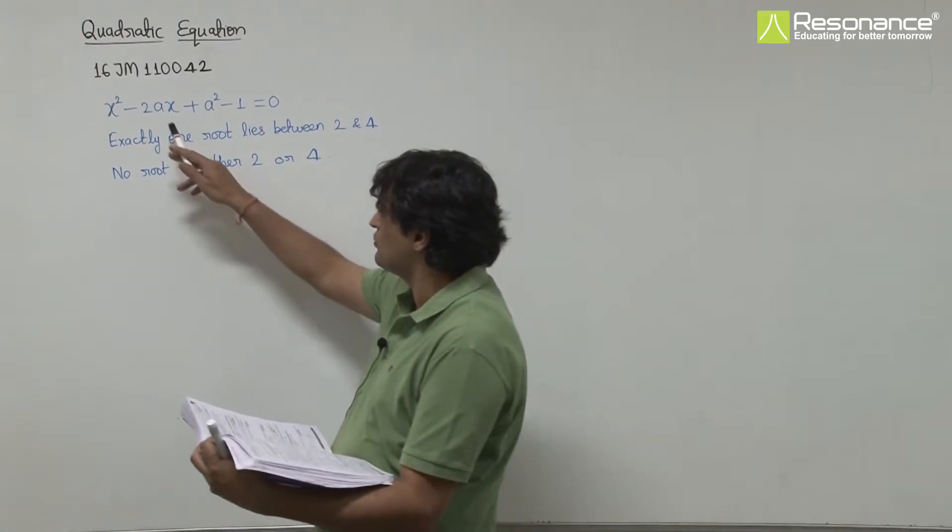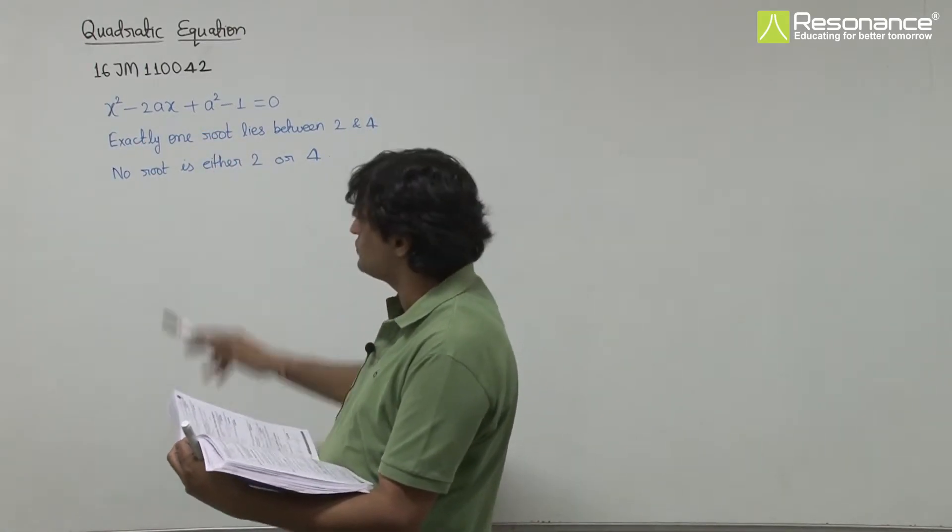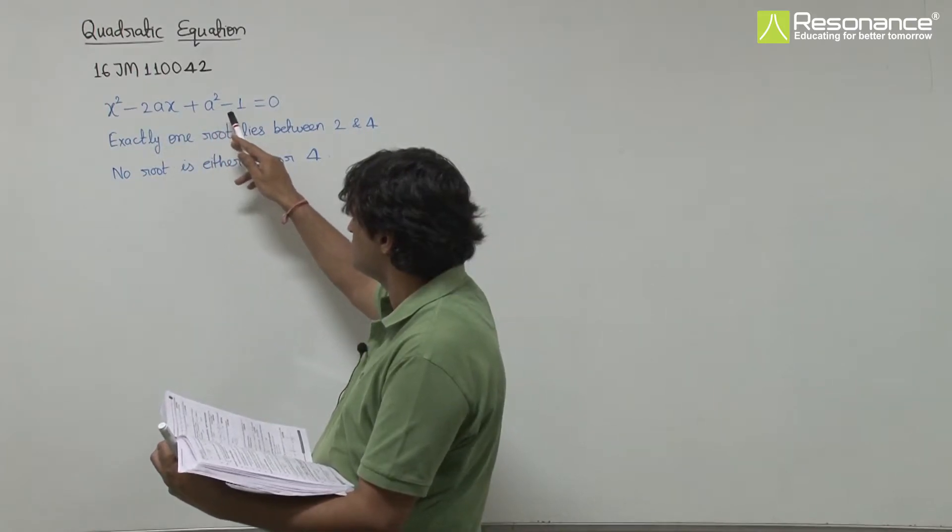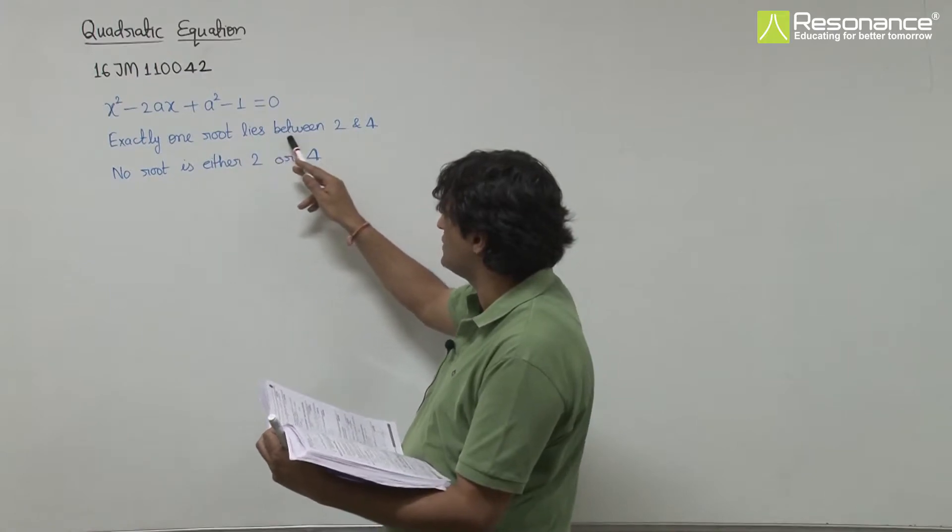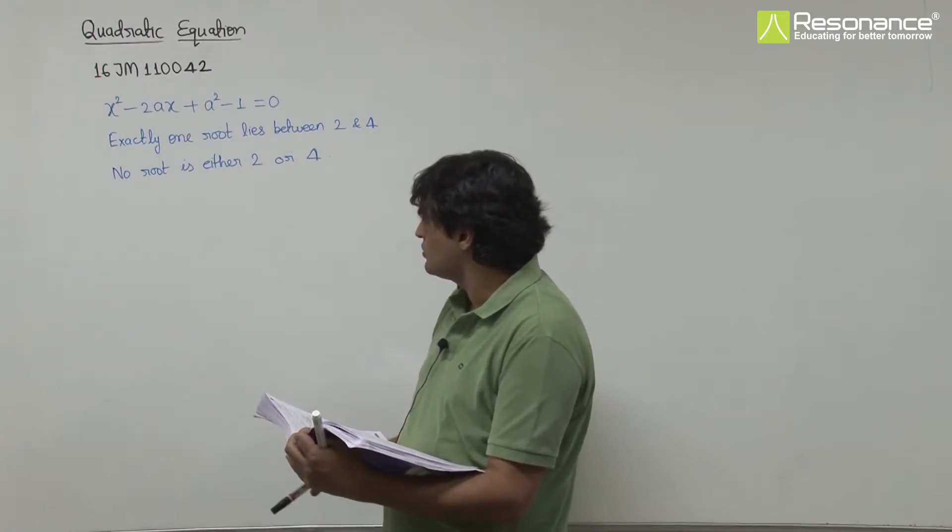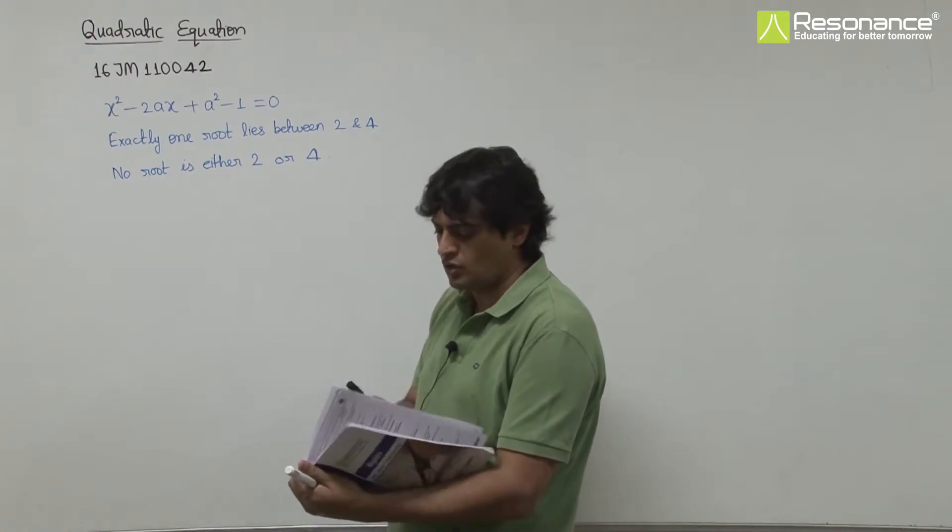In this question, we have to find the values of a for which the equation x² - 2ax + a² - 1 = 0 has exactly one root lying between 2 and 4, with no root at 2 or 4.